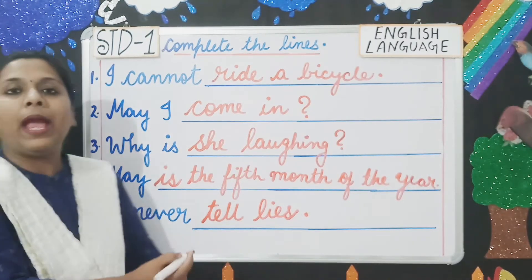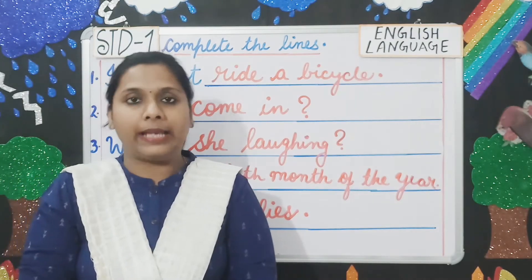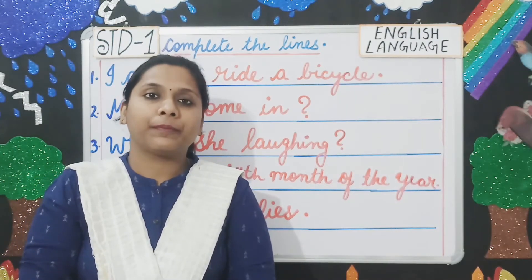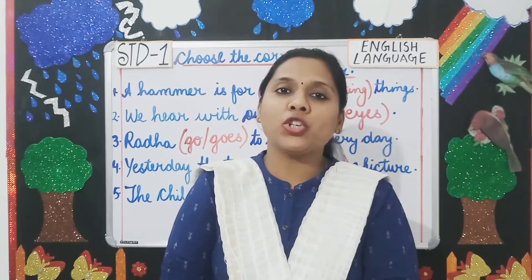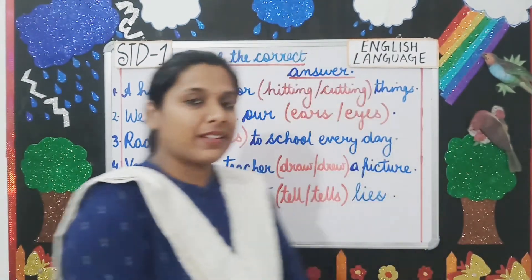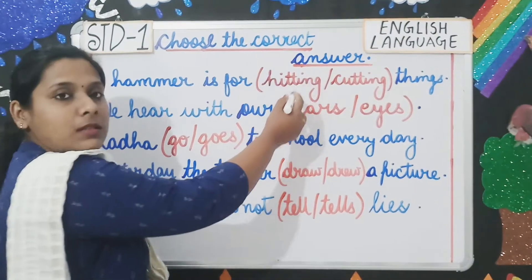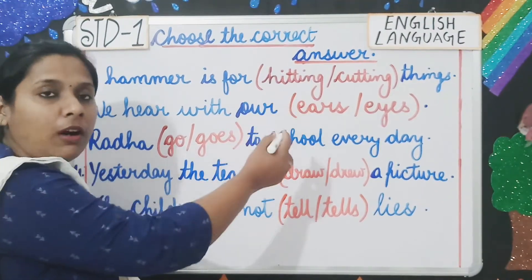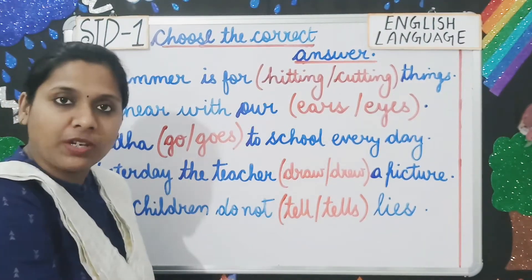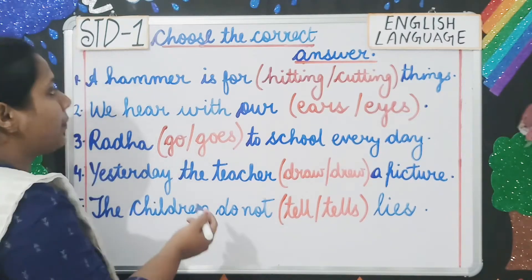So that is how you complete the lines. Moving on to the next question, which is 'choose the correct answer.' Here two options are given and you have to choose the correct one.